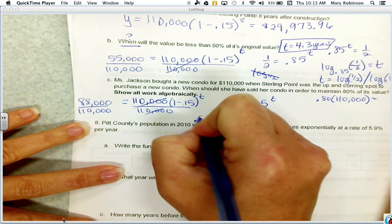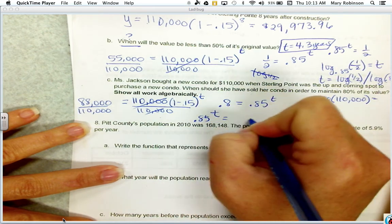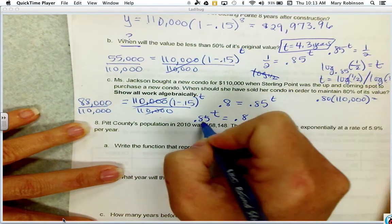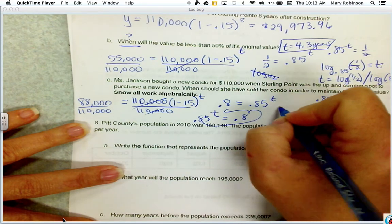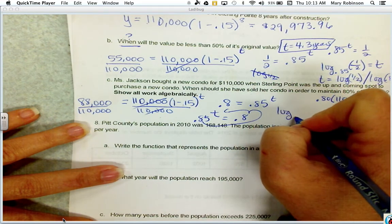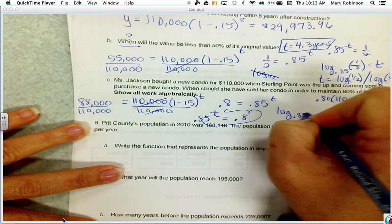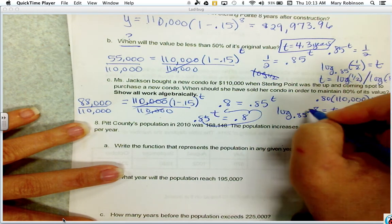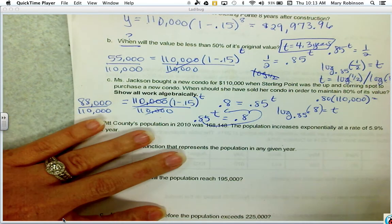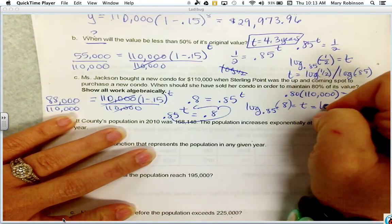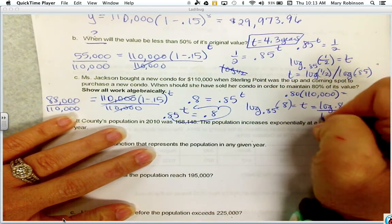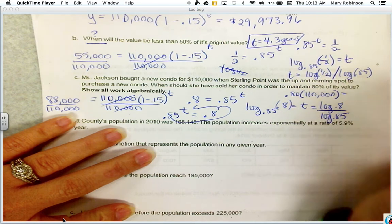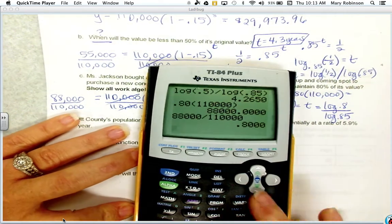Again, 0.85 to the t power equals 0.8. When we convert it to log form, it's going to be log base 0.85 of 0.8 equals t. Using our change of base formula, we'll call that log of 0.8 over log of 0.85 and type it in our calculator.